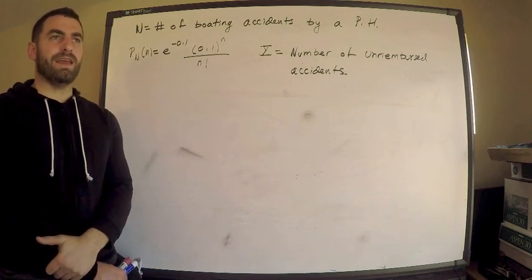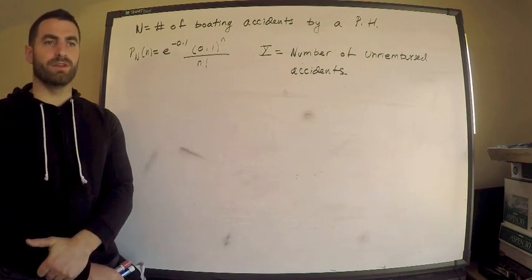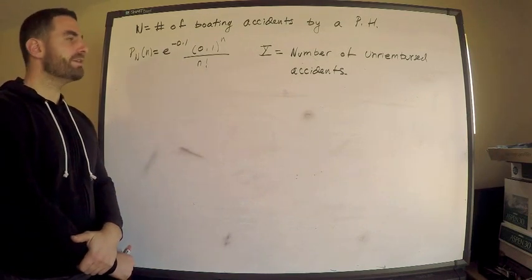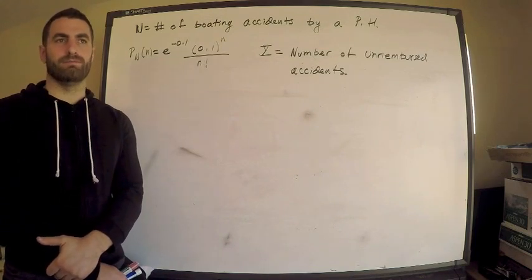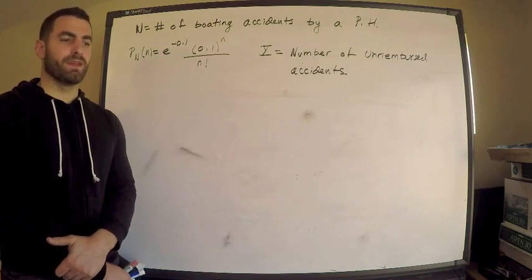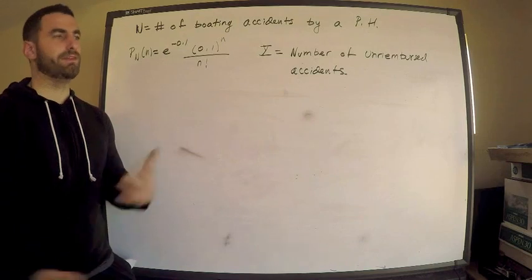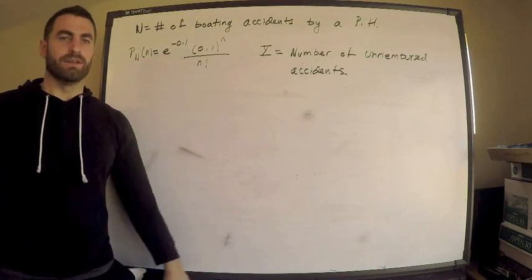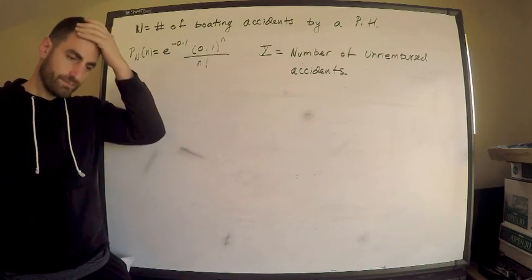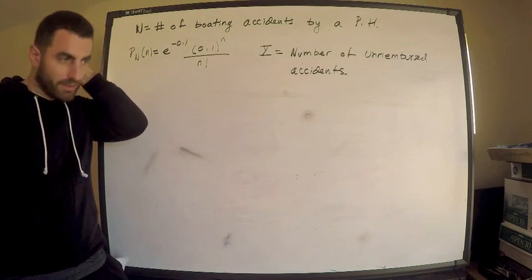We're told that this N, that random variable N, is distributed Poisson. I think they tell me the variance is 0.1, but as you know with Poisson, variance is equal to the mean, so they tell me the mean basically, which is lambda. So this is my PMF, not too bad.